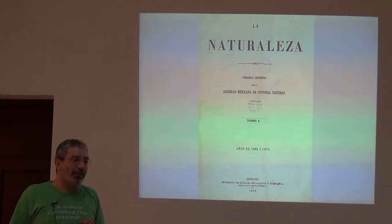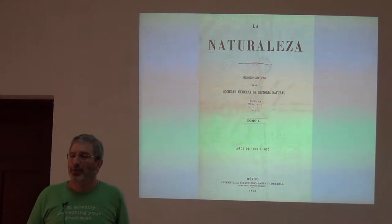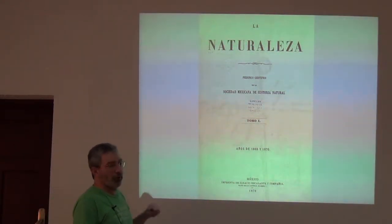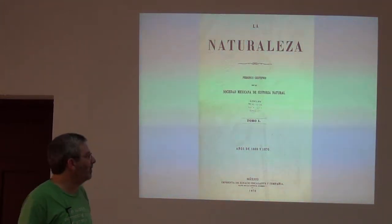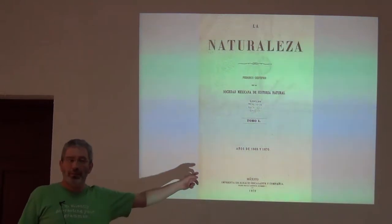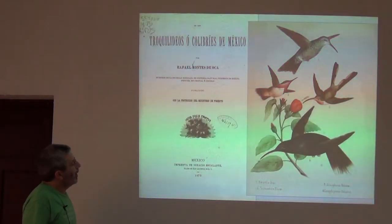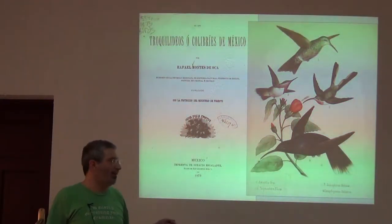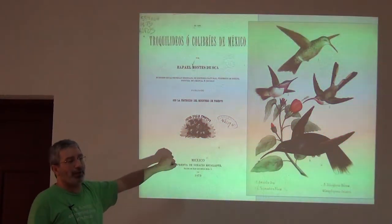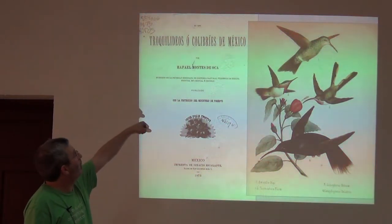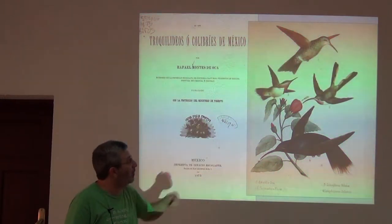Interestingly, there was a very vibrant natural history scientific community in Mexico in the late 1800s. They published this journal and one other, and they are very, very high quality scientific publications — I would say this series rivals what the Smithsonian was doing at the same time. You had a very interesting mixture of science and art. For example, this is one of the publications in that journal — it's called The Hummingbirds of Mexico by Rafael Monteseoca. Very beautiful paintings with it.